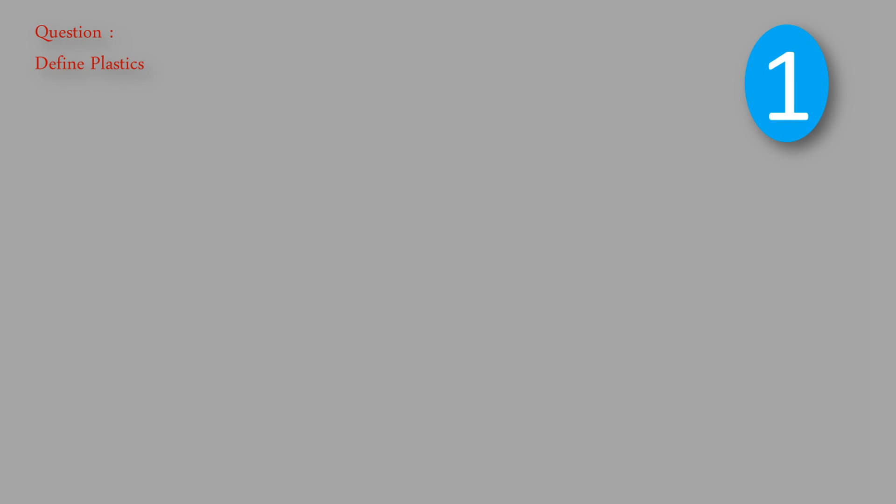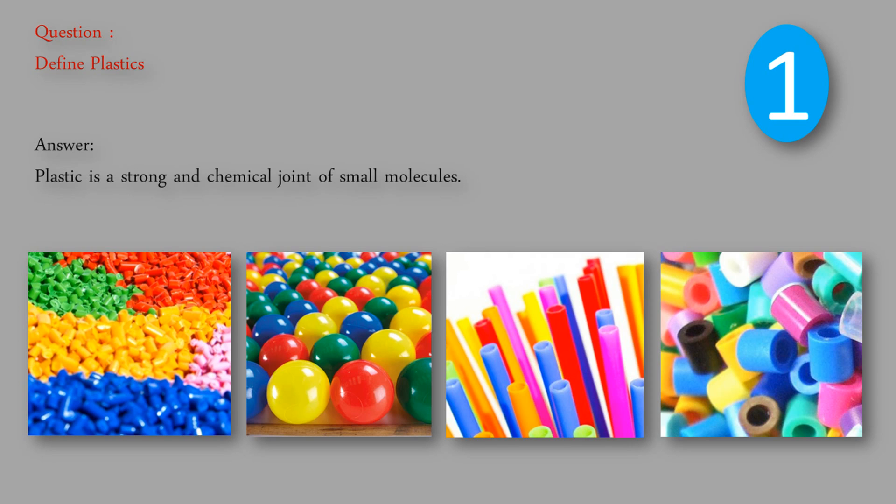Question: Define plastics. Plastic is a strong and chemical joint of small molecules.